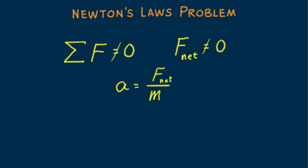Both force and acceleration are vector quantities. The net force and acceleration are always in the same direction. We can write this as F_net equals ma. When the net force is due to gravity alone, acceleration is g, that of free fall. Then F_net equals mg.